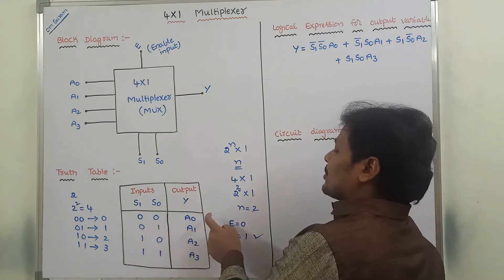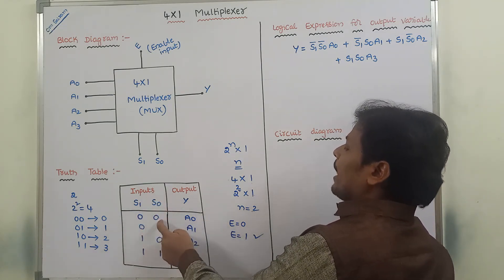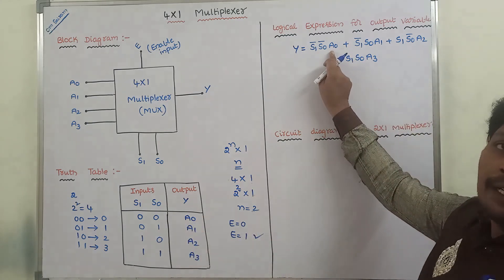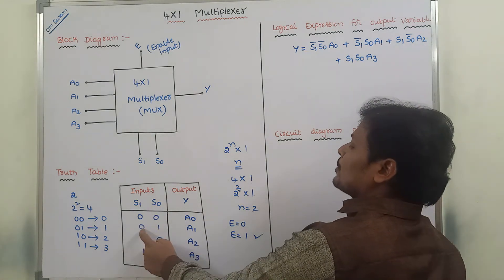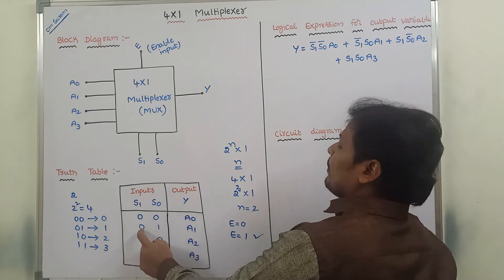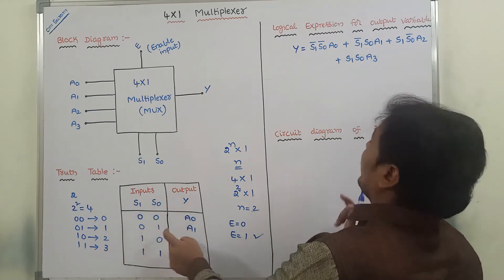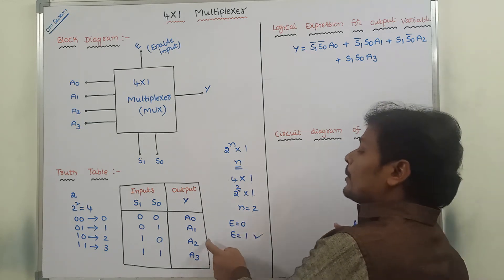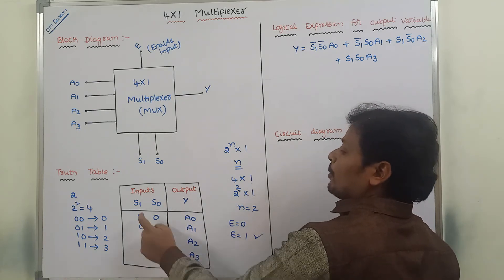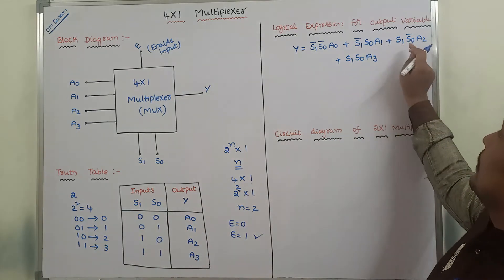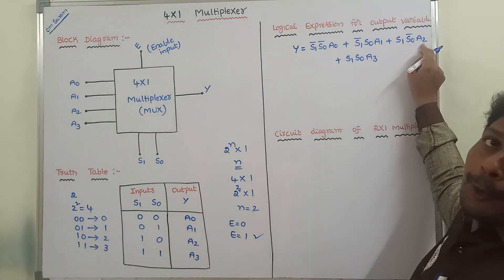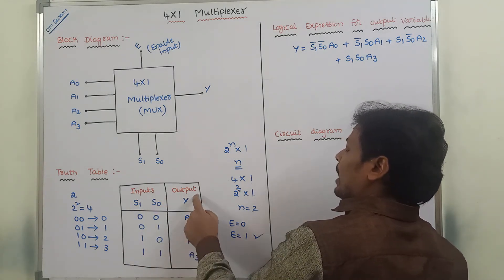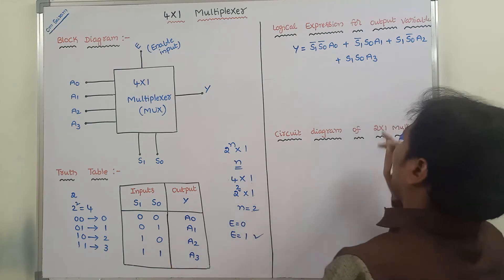Reviewing each row: Row 1 — S1=0 means S1̄, S0=0 means S0̄, output is A0. Row 2 — S1=0 means S1̄, S0=1 means S0, output is A1. Row 3 — S1=1 means S1, S0=0 means S0̄, output is A2. Row 4 — S1=1 means S1, S0=1 means S0, output is A3. Therefore: Y = S1̄·S0̄·A0 + S1̄·S0·A1 + S1·S0̄·A2 + S1·S0·A3.